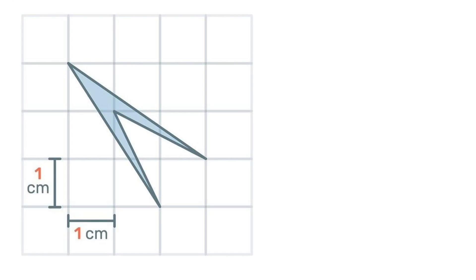So if we say at that point where the one centimeter and one centimeter intersect on the diagram is the origin zero zero, then we have our coordinates of three one, two three, four two, and one four.